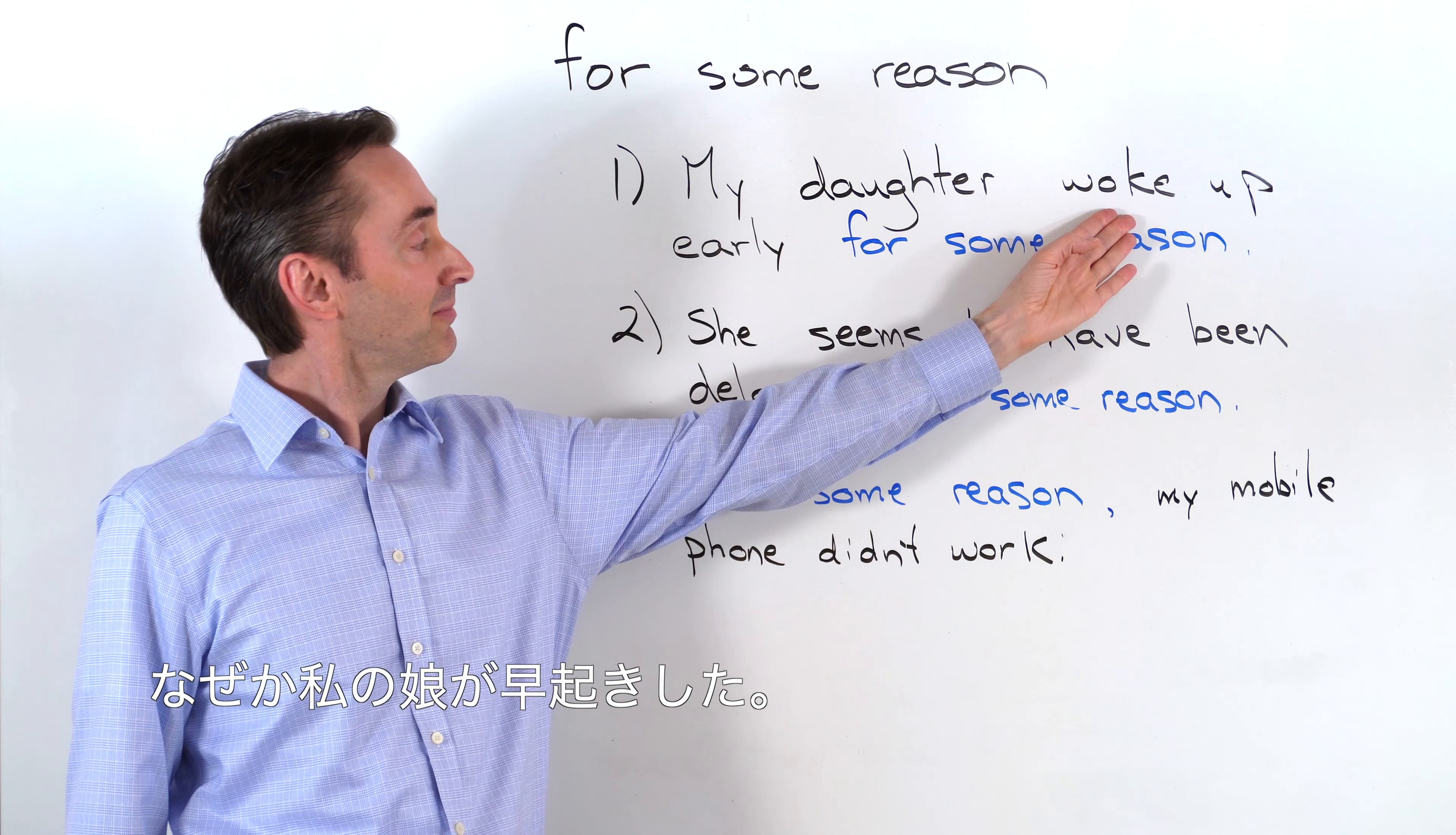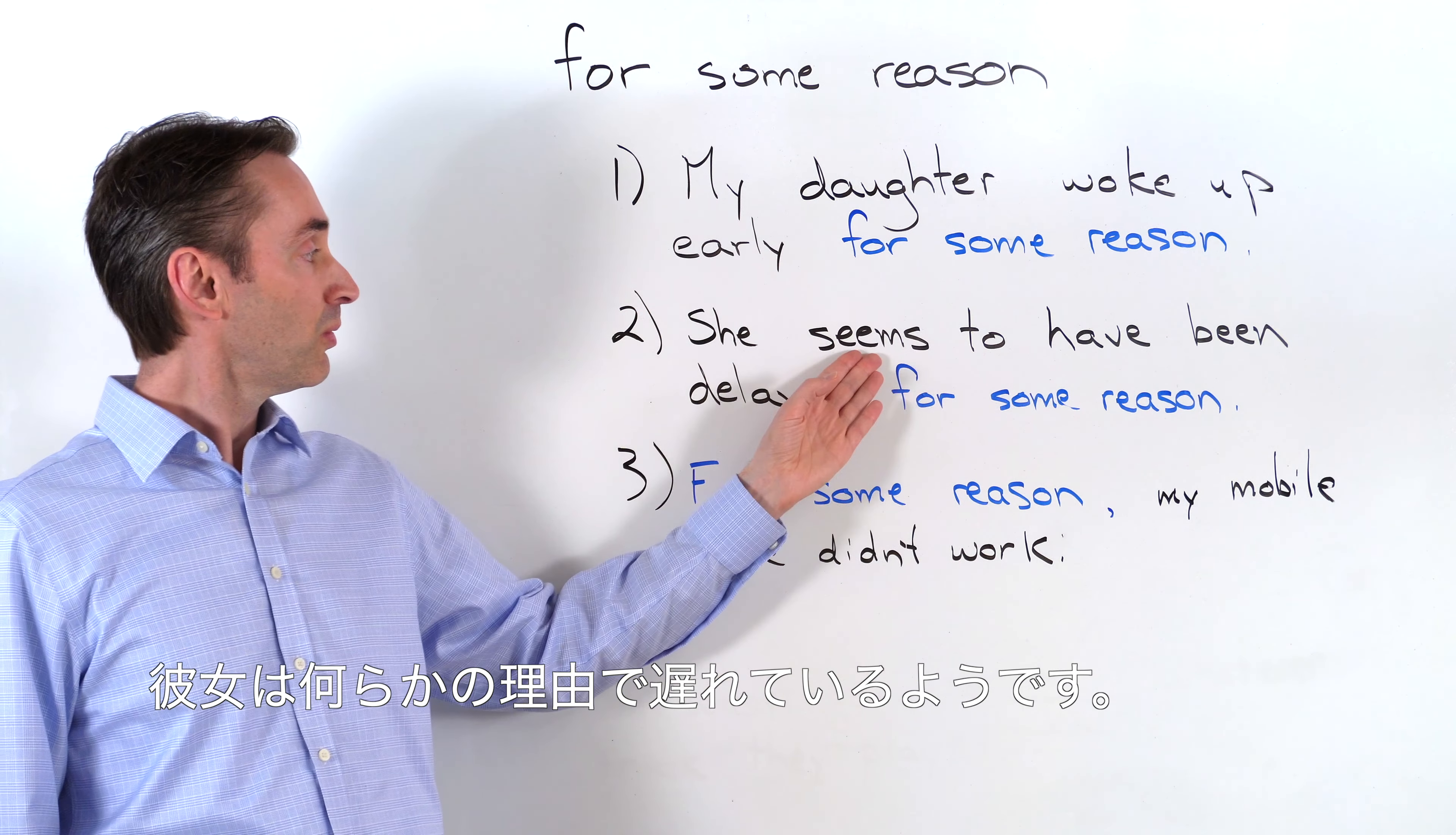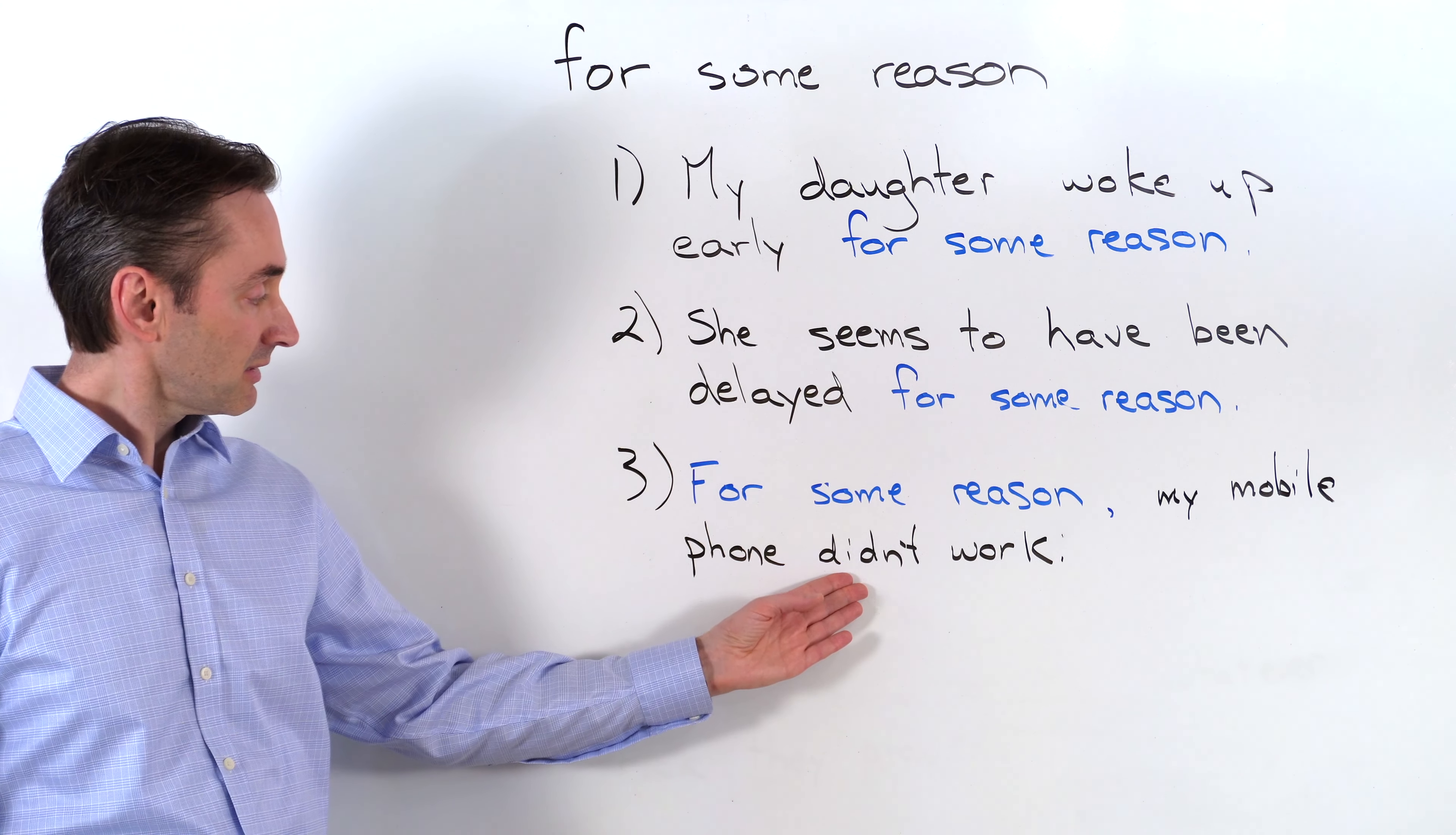1番目は日本語で言うとなぜか私の娘が早いお聞きした。2番目は日本語で言うと彼女は何らかの理由で遅れているようです。3番目は日本語で言うとなぜか私の携帯は動くなかったです。